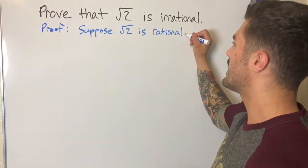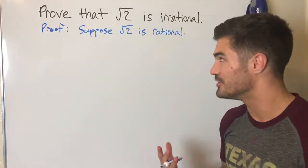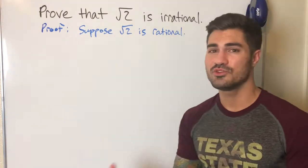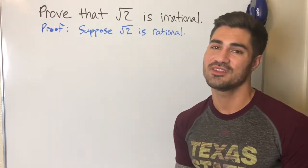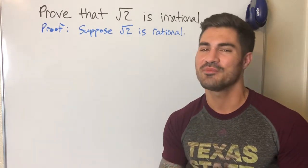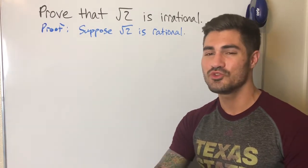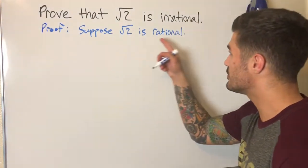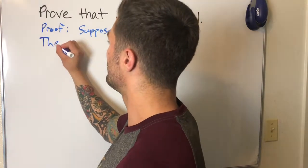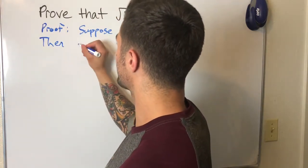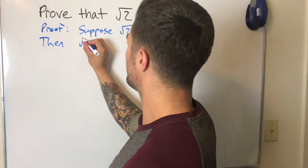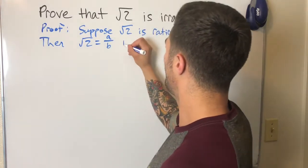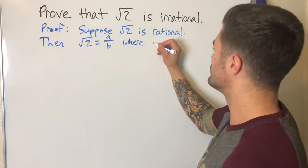From here we can write out what it means to be a rational number — we need the definition. To be a rational number means that the square root of 2 can be expressed as a ratio of integers, and these integers are relatively prime. So: suppose √2 is rational, then √2 = a/b, where a and b are relatively prime integers.